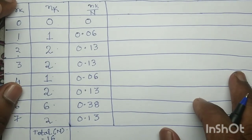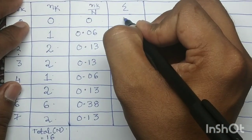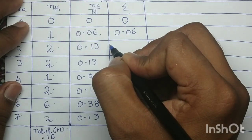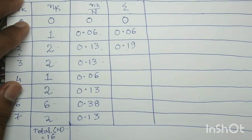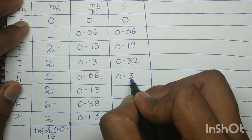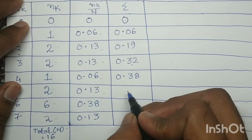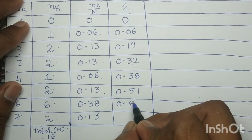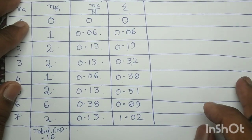For gray label 0 the CDF sigma is 0. Then 0 + 0.06 = 0.06; 0.06 + 0.13 = 0.19; 0.19 + 0.13 = 0.32; 0.32 + 0.06 = 0.38; 0.38 + 0.13 = 0.51; 0.51 + 0.38 = 0.89; 0.89 + 0.13 = 1.02. After determining sigma, next we determine L minus 1 multiplied by sigma.